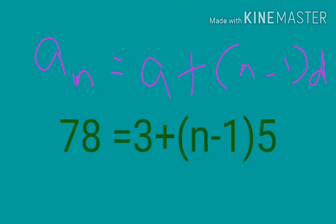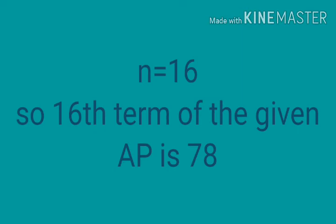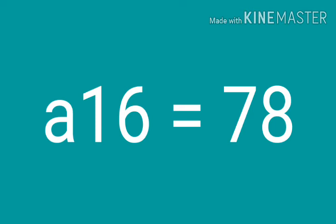We can transpose 3 to RHS. Then 78 minus 3 becomes 75. So N minus 1 into 5 equal 75. N minus 1 equal 75 by 5. N equal 15 plus 1 equal 16. So N equal 16. We can conclude the answer: the 16th term is 78, that is A16 equal 78.